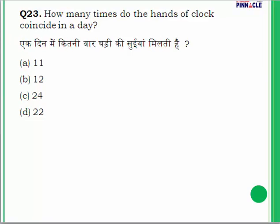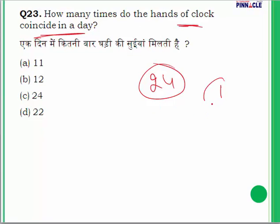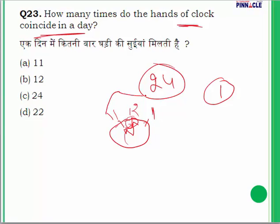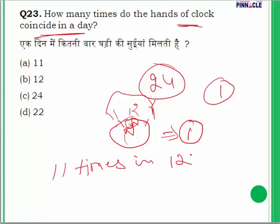Question 23: How many times do the hands of a clock coincide in a day? In each hour the hands coincide once, but from 11 to 1 they coincide only once (not twice). So in 12 hours, hands coincide 11 times. In 24 hours, they coincide 22 times.